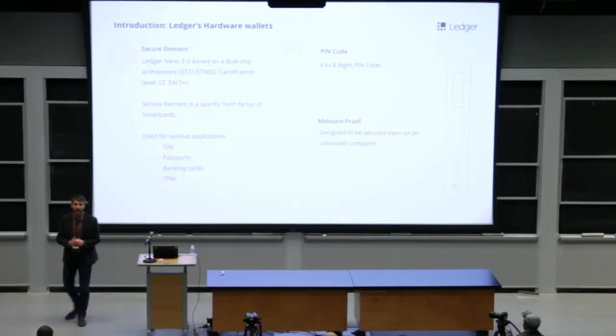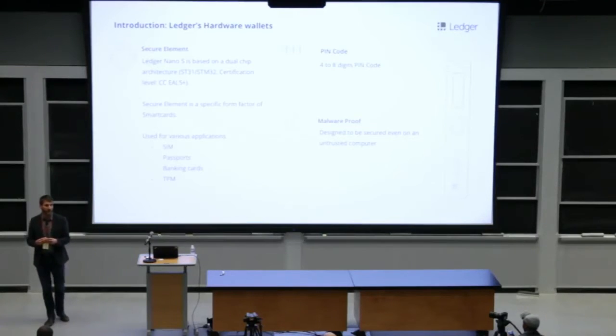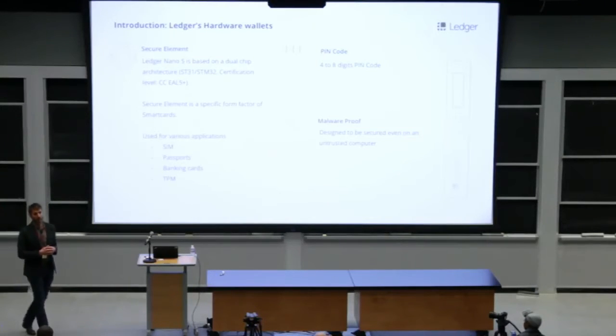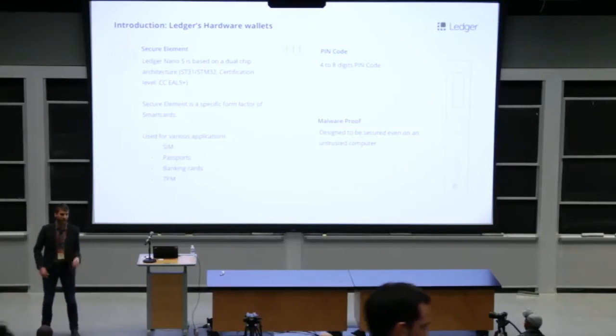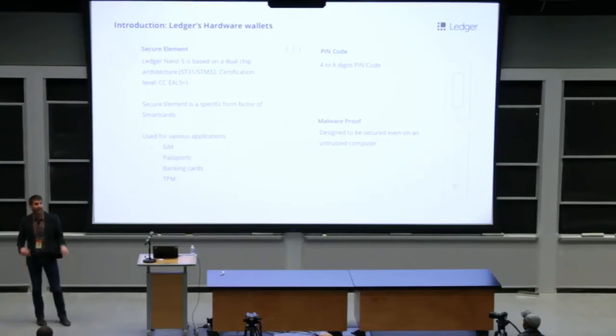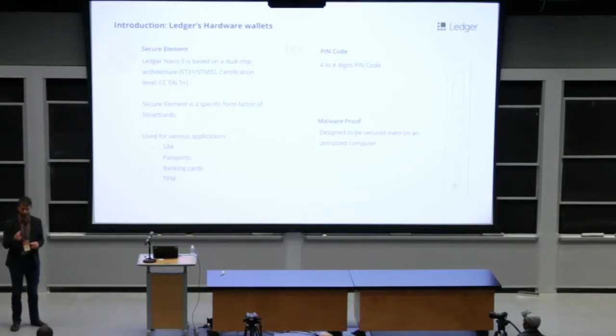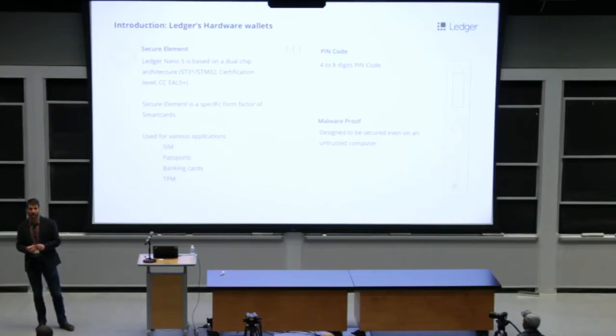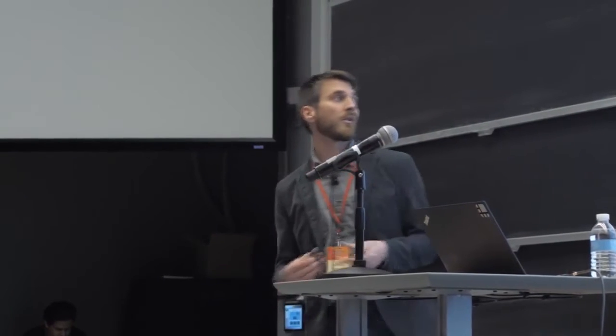Today at Ledger, we design and manufacture hardware-based security solution for cryptocurrency and blockchain application. Our star product is the Ledger Nano S. I'm pretty sure you know what it looks like. Maybe in my pocket. Our architecture is based on SecureElement. It looks like this. SecureElement is a specific form factor of smart cards. They are used in various applications where security is involved, such as passports and banking cards, and now also other wallets.